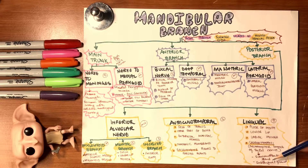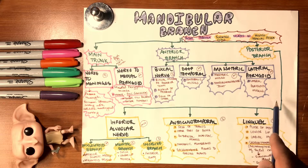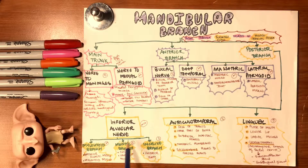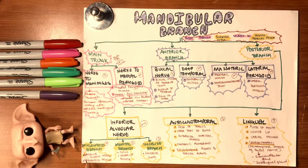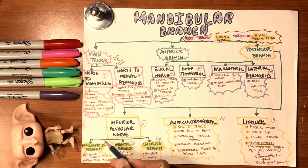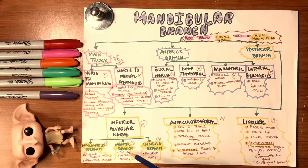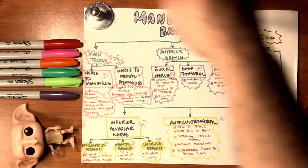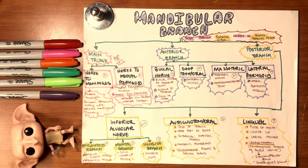The lingual nerve teams up with the chorda tympani, which enters the submandibular ganglion and acts as a secretomotor branch of the facial nerve. Together, lingual and chorda tympani supply the tongue with taste and general sensation, and provide secretomotor fibers to the submandibular and sublingual glands — allowing saliva secretion. The inferior alveolar nerve splits into three branches inside the mandibular canal: the mylohyoid branch (motor to anterior digastric and mylohyoid), the mental branch (sensory to chin, lower lip, and mucosa), and the incisive branch (sensory to the anterior teeth).